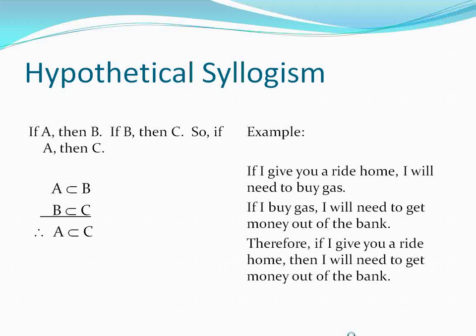The A's are pretty clear: 'If I give you a ride home' and later in the conclusion 'I will give you a ride home' — noted as appearing twice. B is 'I will need to buy gas': 'If I give you a ride home, I will need to buy gas.' The second set of premises: 'If I buy gas, I will need to get money out of the bank.' We see B and C represented in the premises and in the conclusion, making this easily identifiable as a hypothetical syllogism.